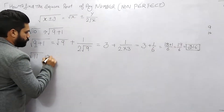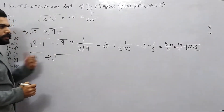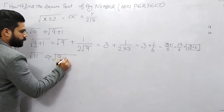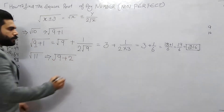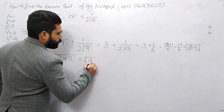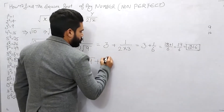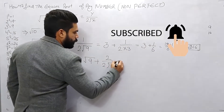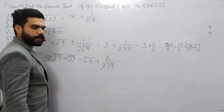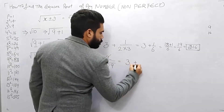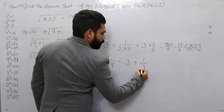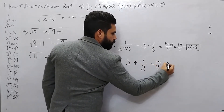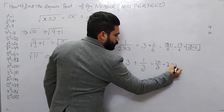Next example: 11. We write 9 plus 2 equals 11. Using the y method: root 9 plus 2 over 2 root 9, which gives 3 plus 1 over 3 — that's 10 over 3, so the answer is 3.33.